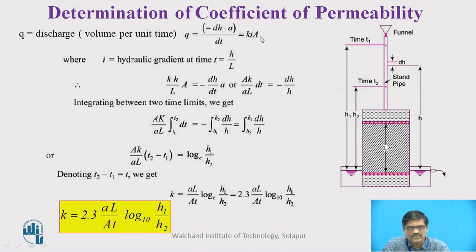If I use this equation, we can rearrange it. Here you can see I is replaced by H by L. Therefore, it is KH upon L into A, and the left hand side is minus dH upon dT A. Again, we can rearrange this and take dT and dH on different sides. dT to the left side gives AK upon AL dT equal to minus dH upon H.